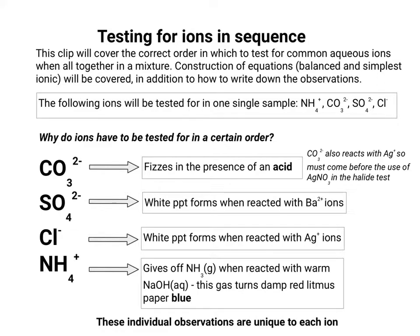Carbonate has to come first because it reacts with silver plus ions to make a white precipitate, which would interfere with the chloride test. Silver carbonate would be a white precipitate. Carbonate also has to come before sulfate because the Ba²⁺ ions used in the sulfate test would react with carbonate to make barium carbonate — both are white solids that would mask the white precipitate in the sulfate and chloride tests.